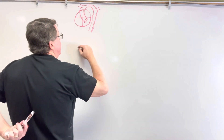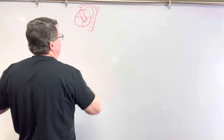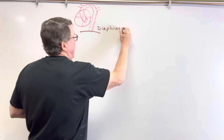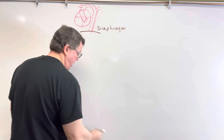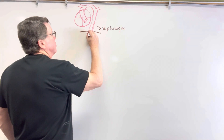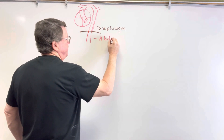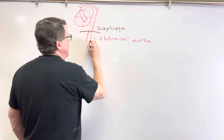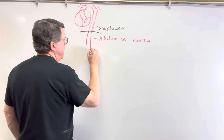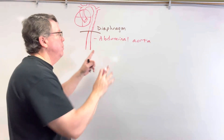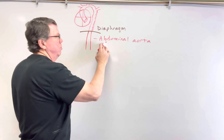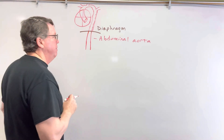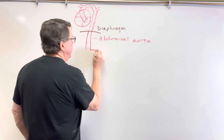When we get down to about T12, you're going to have your diaphragm, and after the aorta crosses the diaphragm it becomes the abdominal aorta. It continues down, and we're not too interested in the upper part — the suprarenal portion — we're more interested in the lower part. So I'm not going to draw the celiac artery or the superior mesenteric artery.